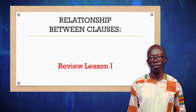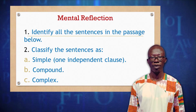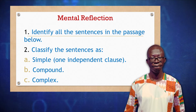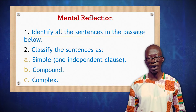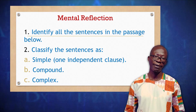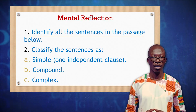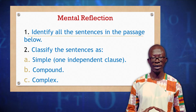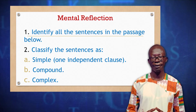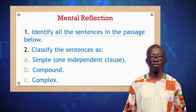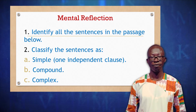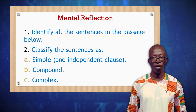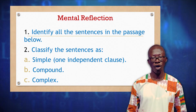Let's go into the lesson. Mental reflection: identify all the sentences in the passage below — that's question one. A passage is going to be displayed and in that passage we are required to identify all the sentences. Remember, at the beginning of this lesson on relationship between clauses, we did discuss what a sentence is. We mentioned that in an orthographical manner — that's in written form — a sentence can be identified as a statement that begins with a capital letter and ends with either a full stop, an exclamation mark, or a question mark.